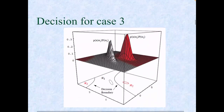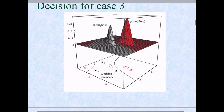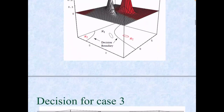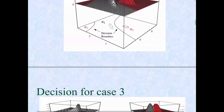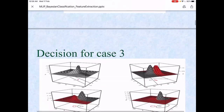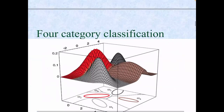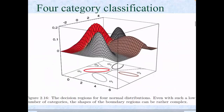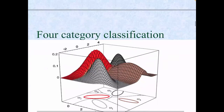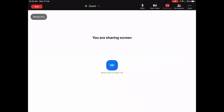When Sigma_1 is not equal to Sigma_2, the decision boundary can take an arbitrary shape — two parabolas, circles within circles, and so on. In a four-category case as well, the boundary can be arbitrary based on the nature of sigma_1, sigma_2, sigma_3, and sigma_4. In the next class, we will start discussing maximum likelihood classification.